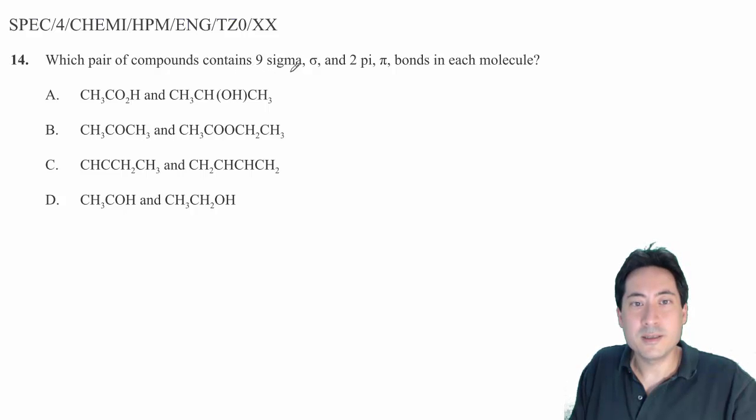Which pair of compounds contain nine sigma and two pi bonds in each molecule? Oh my god. Okay. Pi bonds, nine sigmas. I'm going to have to write these out. It's going to be painful.